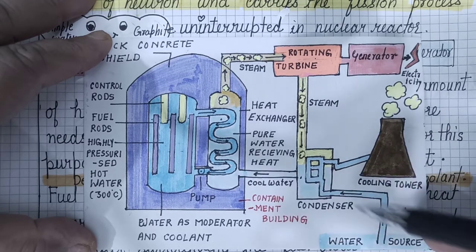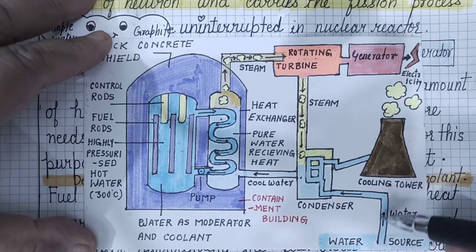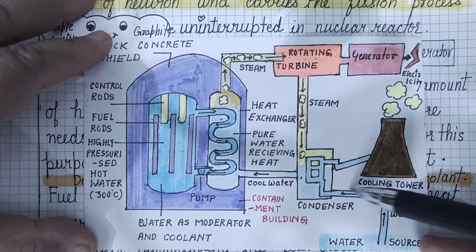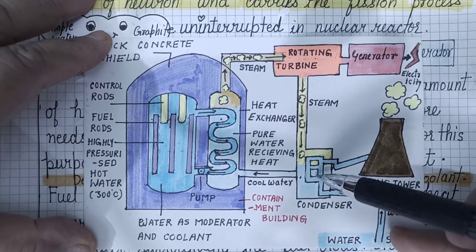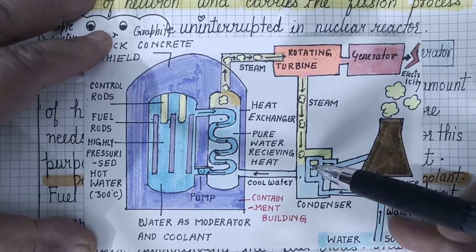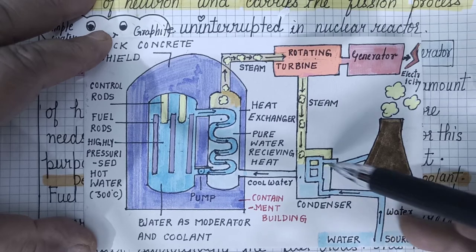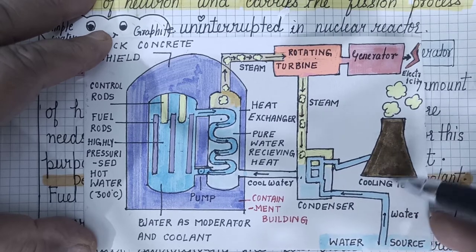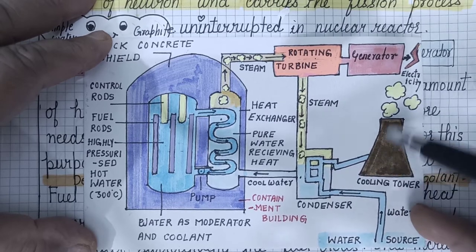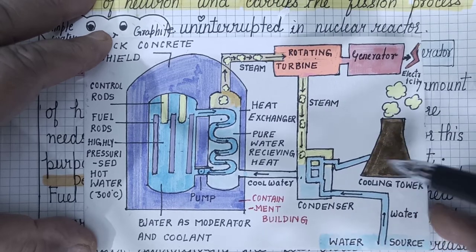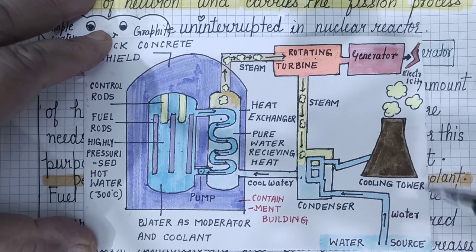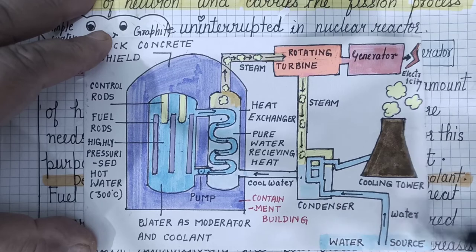The condensed water gets back to the heat exchanger. The steam is absorbed and cooled through the cooling tower, and the water is returned to the water resources to be recirculated.